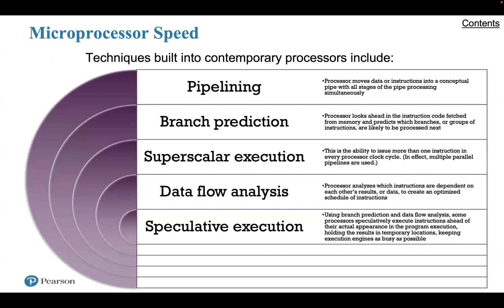What about branch prediction? The processor looks ahead at the instruction code fetched from memory and predicts which branches or groups of instructions are likely to be processed next. If the processor gets it right most of the time, it can prefetch the correct instructions and buffer them so that the processor is kept busy. The more sophisticated examples of this strategy predict not just the next branch, but multiple branches ahead. Branch prediction increases the amount of work available for the processor to execute.